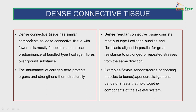Dense connective tissue has similar components as loose connective tissue but with fewer cells — mostly fibroblasts — and a clear predominance of bundled Type I collagen fibers over the ground substance. The abundance of collagen protects organs and strengthens them structurally. The dense regular connective tissue consists mostly of Type I collagen fibers and fibroblasts aligned in parallel for great resistance to prolonged or repeated stresses from the same direction. Examples include flexible tendons connecting muscles to bones, aponeuroses, and ligaments — bands or sheets that hold together components of the skeletal system.